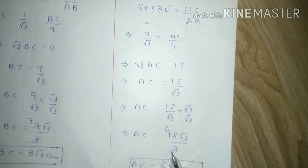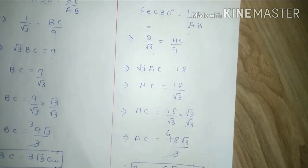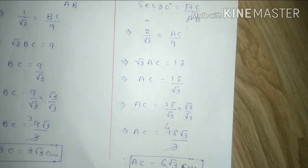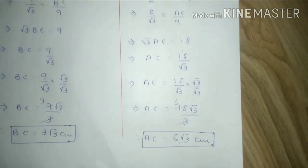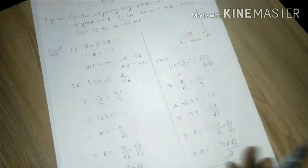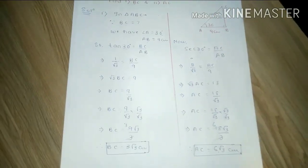And under root 3 into under root 3 which will become 3, and 3 by table I will cut this, and we will finally get AC is equal to 6 under root 3.